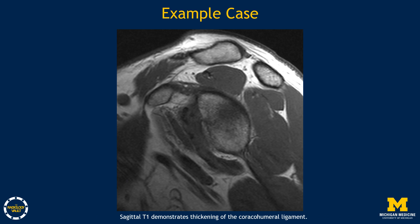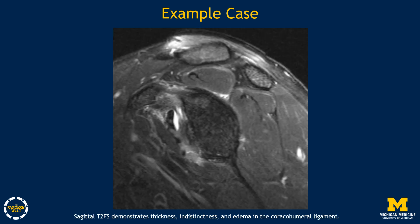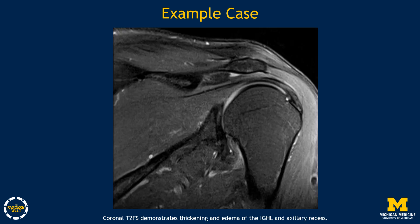This is another example case also demonstrating thickening of the coracohumeral ligament. This example case demonstrates thickening, indistinctness, and edema in the coracohumeral ligament as seen on the sagittal T2 fat-saturated sequence. In this case, we have thickening and edema of the inferior glenohumeral ligament and axillary recess. Compared to the first example case, this is a more common presentation where you do have some thickening, indistinctness, and some edema, but not as profound thickening of the inferior glenohumeral ligament and axillary recess.